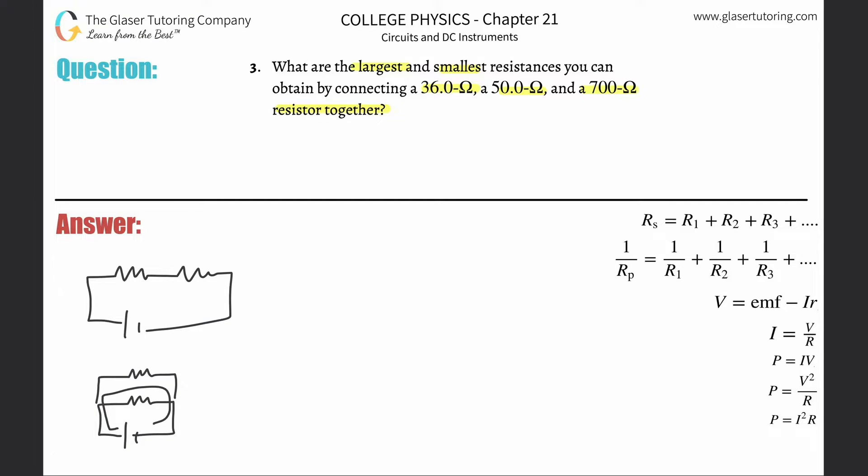Whereas in parallel, for the current to go around the circuit, it can flow through the first one or it can flow through the second one. It'll also flow simultaneously through both, but to get through the second resistance it does not have to go through the first resistance as it did in series.